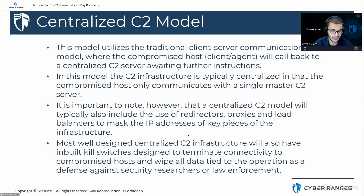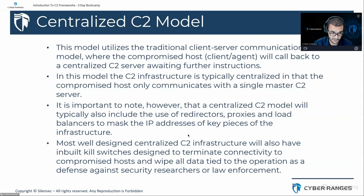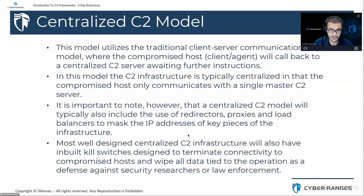Redirectors, proxies, and load balancers are used not only to ensure the stability of the C2 infrastructure — since adversaries may have huge requirements in terms of how many systems they have compromised — but also to mask the IP addresses of key pieces of infrastructure, namely the primary C2 server. The typical setup is that you have your primary C2 server configured to pass its traffic through a proxy, and the agent or implant is configured to communicate through that proxy server, which then forwards the traffic to the C2 server.